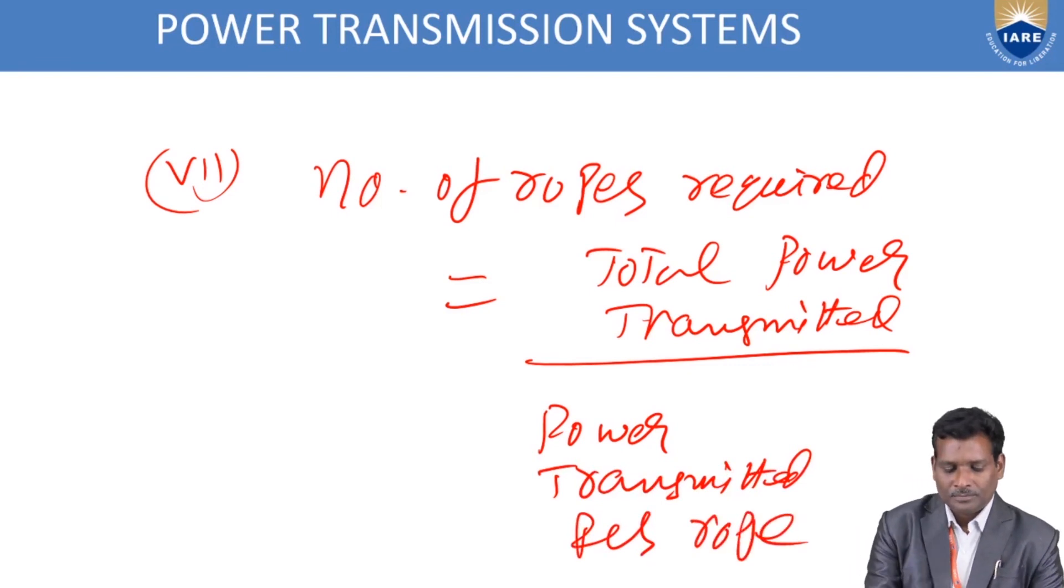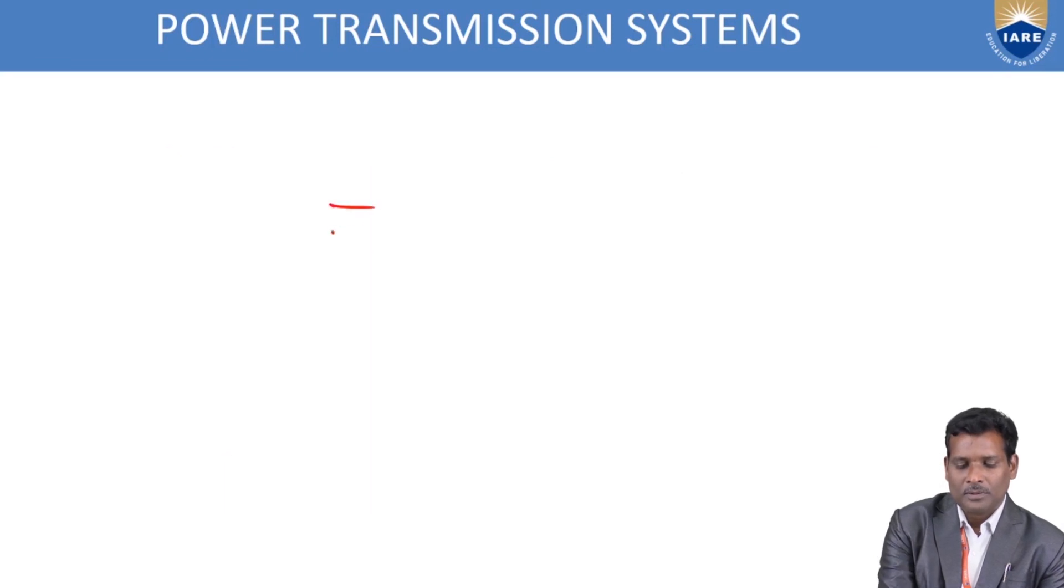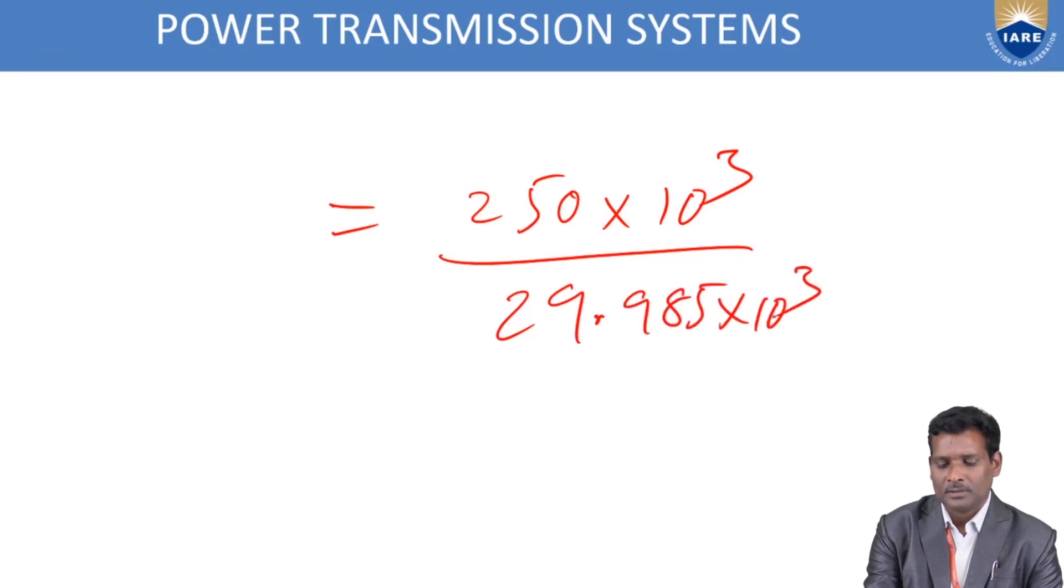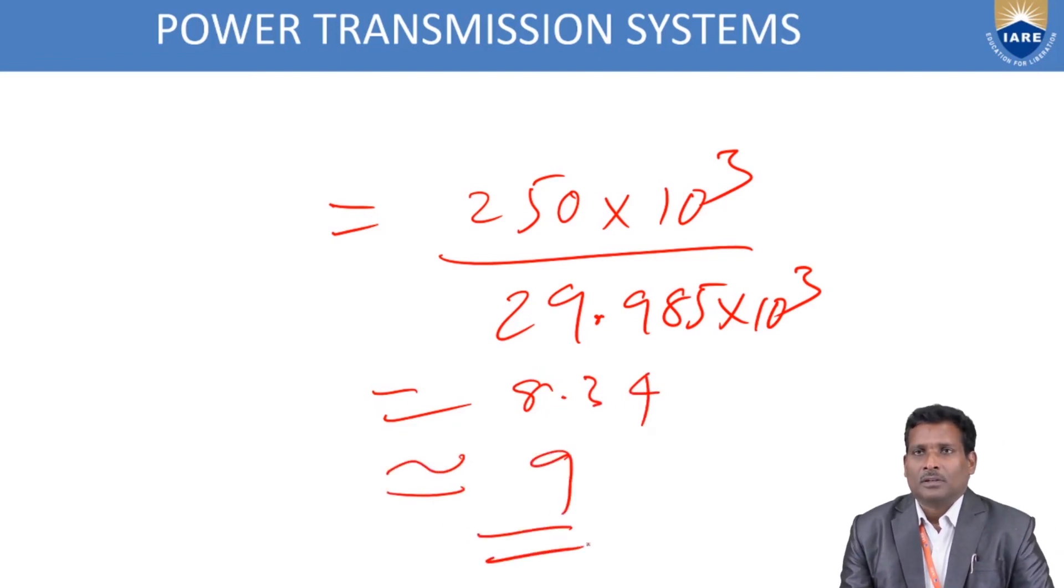Number of ropes required equals total power transmitted divided by power transmitted per single rope. Total power transmitted is 250 kW, convert to watts: 250 × 10³. Power transmitted per rope we calculated: 29.985 kW convert to watts. We get number of ropes 8.34, so you can say 9. The total number of ropes required is 9 to transmit 250 kW. Like this we have to solve rope drive problems.